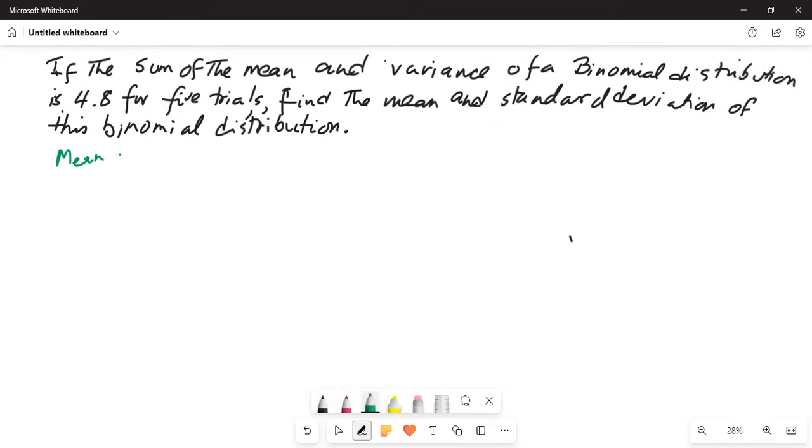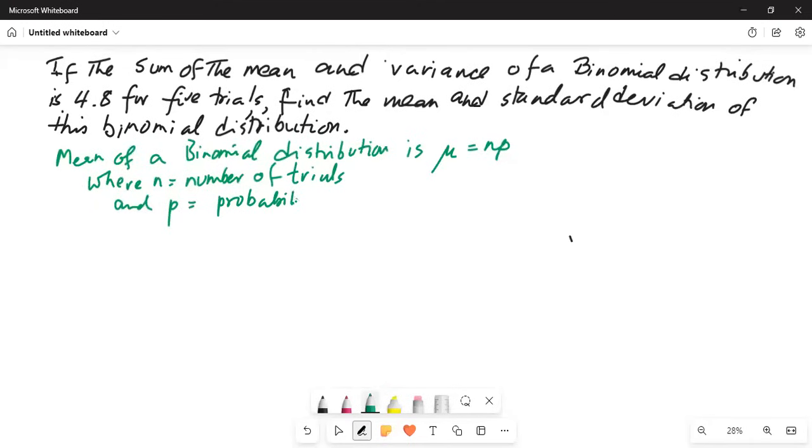Mean of a binomial distribution is mu equal to n times p, where n is equal to number of trials and p is probability of success in each trial.